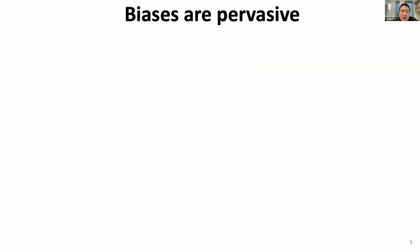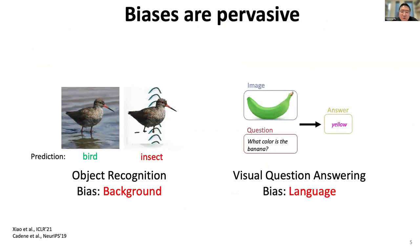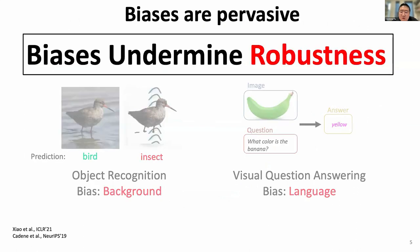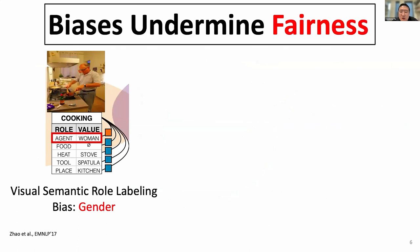The bias is pervasive because every dataset may contain spurious correlations, such as background bias in object recognition and language bias in visual question answering. These biases undermine AI models' robustness and safety for real-world generalization. Even more, when the bias becomes relevant to humans, it becomes a fairness issue. For example, in a visual semantic labeling task, models are biased towards genders, associating cooking with female, even if it's a man in the image.